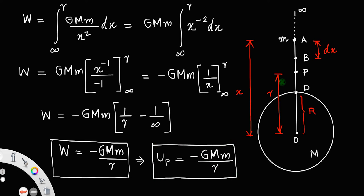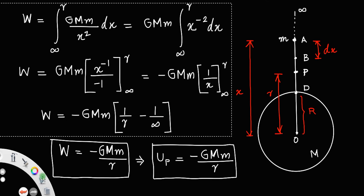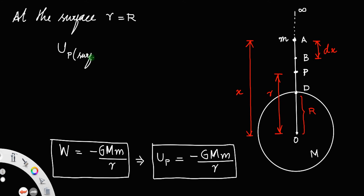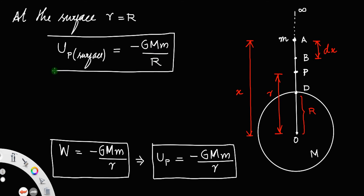What about the potential energy at the surface of the earth? That means the work done to bring a mass m from infinity to the surface of the earth. At the surface, r is equal to the radius of the earth R. Therefore, the potential energy at the surface of the earth is equal to −GMm/R.